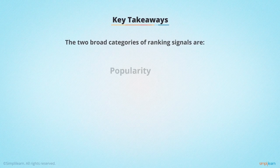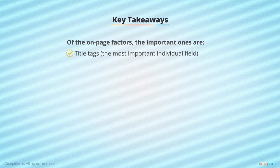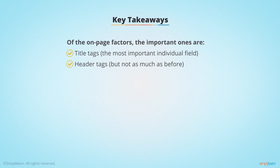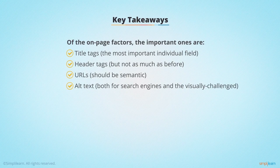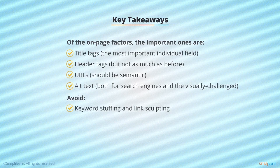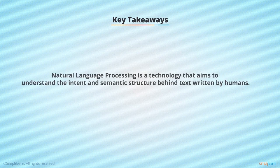To summarize: the two broad categories of ranking signals are popularity and relevancy. Of the on-page factors, title tags are the most important individual field. Header tags are important but less so than in the past. URLs should be semantic and optimized. Alt text is important for both search engines and blind users. You should always avoid keyword stuffing, hidden text, repetitive anchor text, and cloaking. Natural language processing is a technology that aims to understand the intent and semantic structure behind text written by humans.